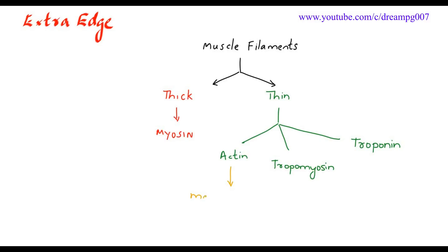Actin is the major protein present in the thin filament. Tropomyosin covers the active site present in the actin. There are three types of troponin: troponin I, T, and C. Calcium binds to troponin C.